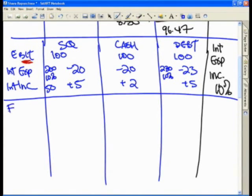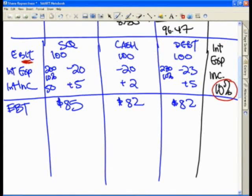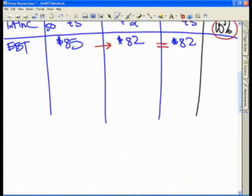This gets you now a pre-tax income, earnings before taxes, of $85 in the status quo scenario if you did not buy back any stock, $82 for both the cash and the debt scenario. They are both the same at this point because we have assumed the same 10% interest rate. Profitability has decreased by $3 simply because you have an extra $30 at 10%, which is $3, and that has impacted your earnings by $3.